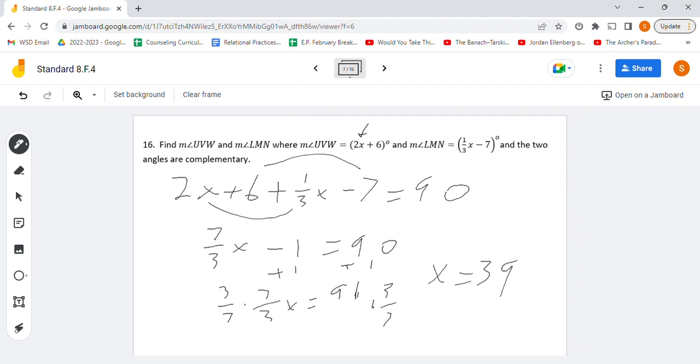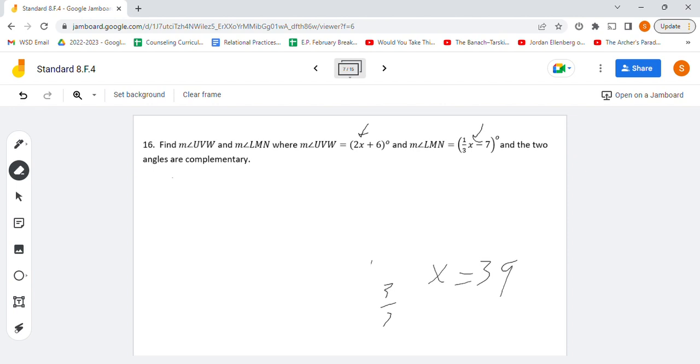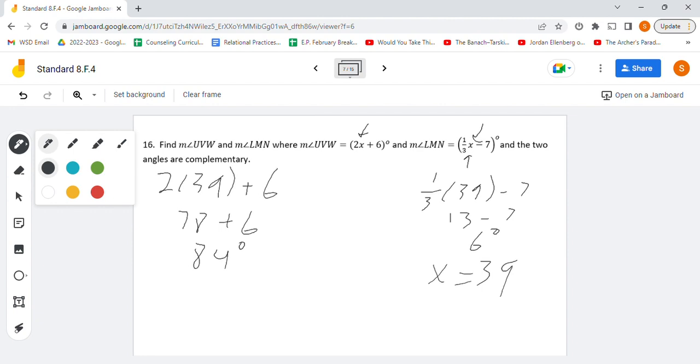We're going to plug that value of 39 into here, and into here to find our two angles, and if we are correct, they should add up to 90 degrees. First we get 2 times 39 plus 6, 2 times 39 is 78, and 78 plus 6 gets us 84, that should be the measure of that first angle. Let's plug in 39 into there, we get 1 third times 39 minus 7, 1 third times 39 is 13, and 13 minus 7 is 6 degrees. So we have two angles that add up to 90 degrees, that means our answer was correct. UVW is this one right here, and LMN is this one right here, so we're going to write equals measure of angle UVW for that, and use that same notation over here for this one. Thank you very much for watching, and good luck!